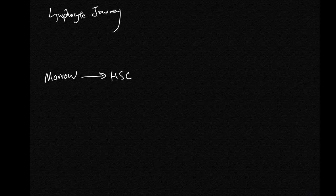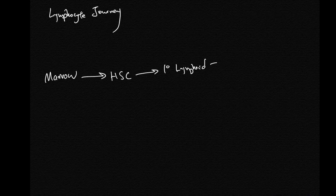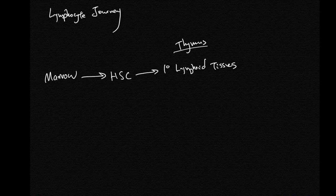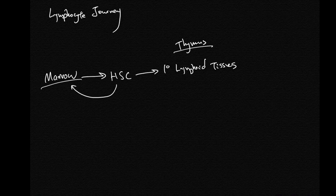It starts in the marrow which makes hematopoietic stem cells, and these will go to the primary lymphoid tissues. There are two: thymus and the marrow. The stem cells that go to the marrow will receive signals and commit to being the B stem cell.